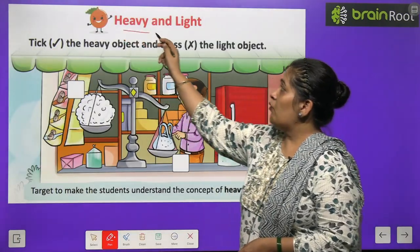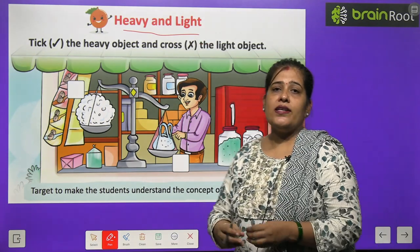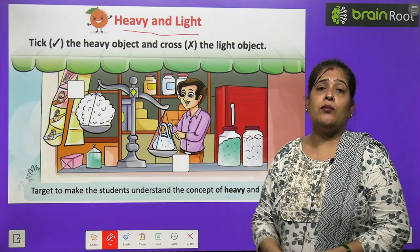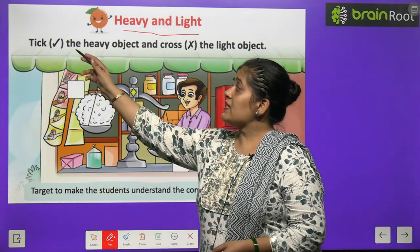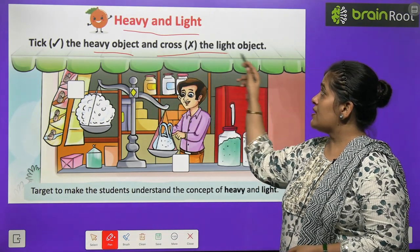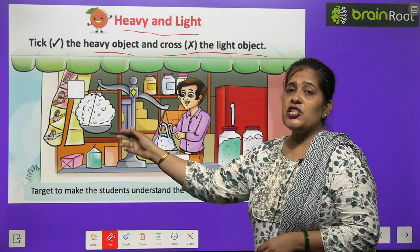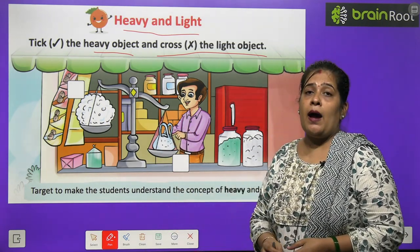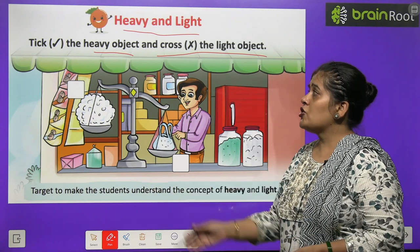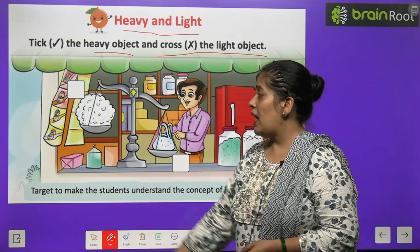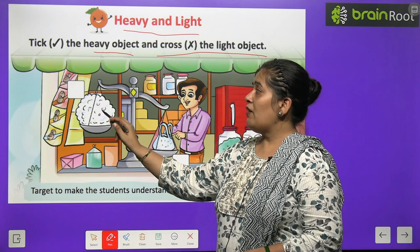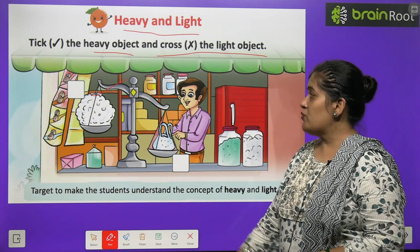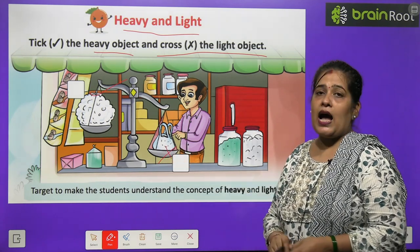Now the next is heavy and light. Heavy کا مطلب ہوتا ہے بھاری اور light کا مطلب ہوتا ہے ہلکا. Tick right the heavy object and cross the light object. اس پچھر میں دو objects بنے ہوئے ہیں بچوں — جو heavy object ہے اس میں right کرنا ہے اور جو light object ہے اس کو cross کرنا ہے. This one is the heavy object so we make a tick, and this one is the light object so we cross it out.